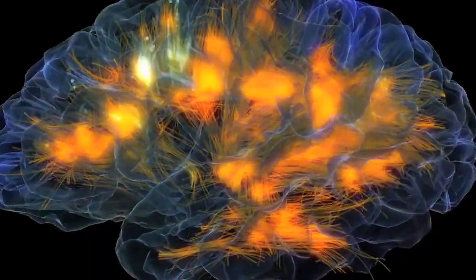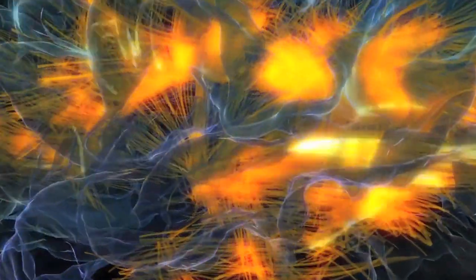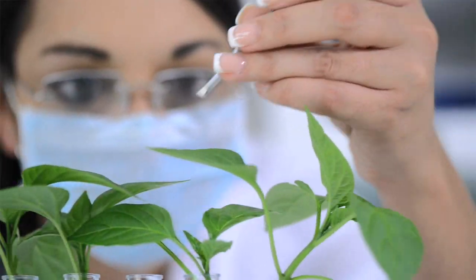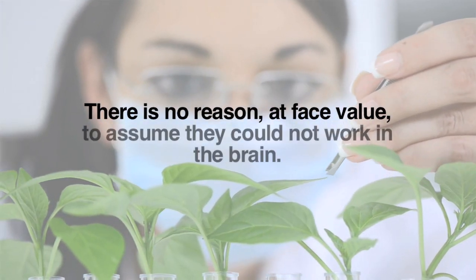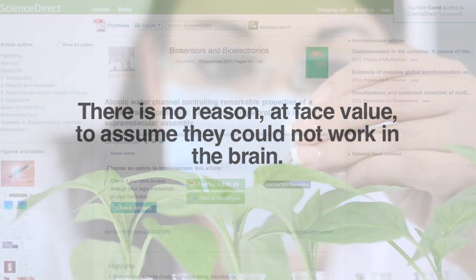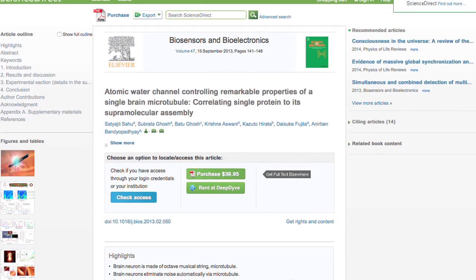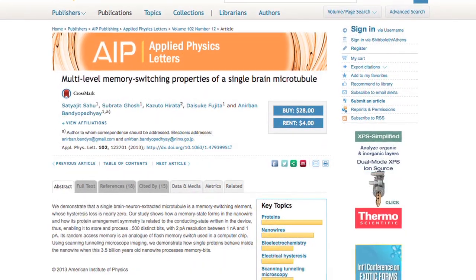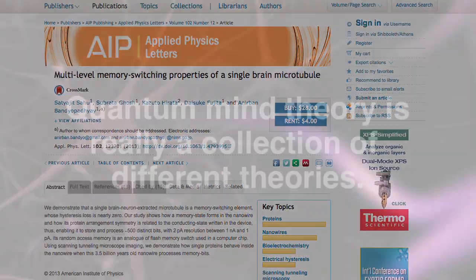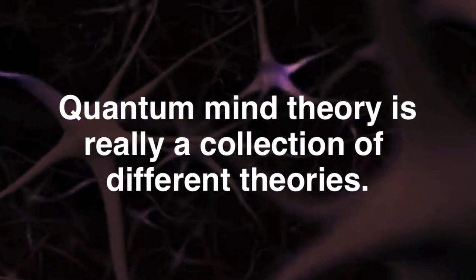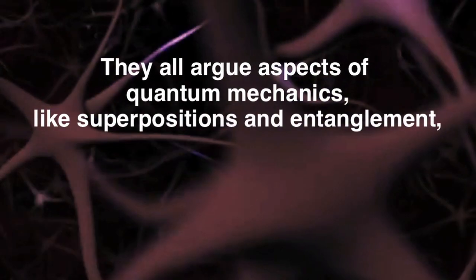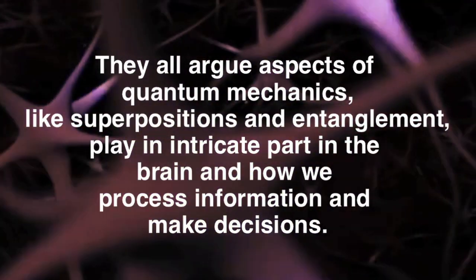But can this be applied to the brain? Can aspects of quantum biology better explain how the brain works and how the mind or soul is able to work with the brain? There is actually new research on quantum mind theory which can better explain how the brain works. Quantum mind theory is really a collection of different theories that argue aspects of quantum mechanics, like superpositions and entanglement, play an intricate part in the brain.